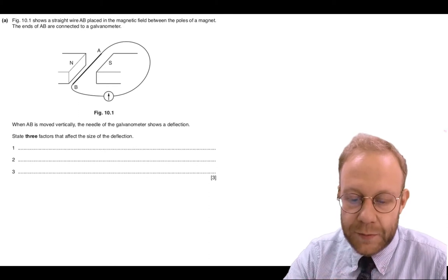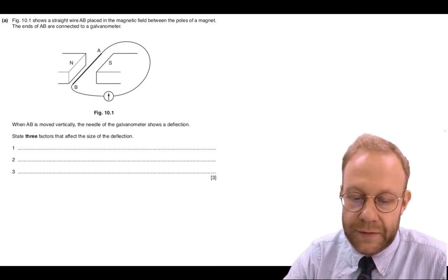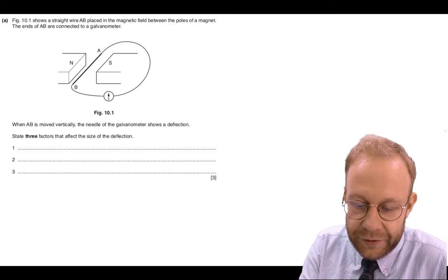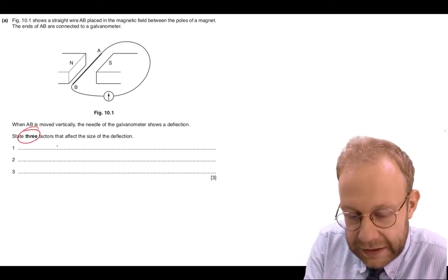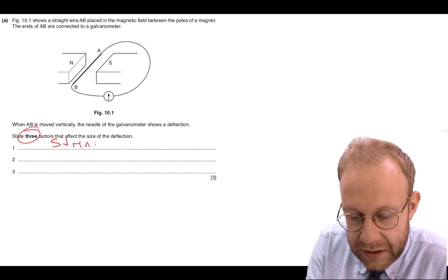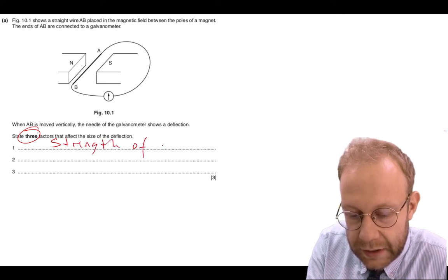When AB is moved vertically, the needle of the galvanometer shows a deflection. We need to state three factors that affect the size of the deflection. The first factor is the strength of the magnets.